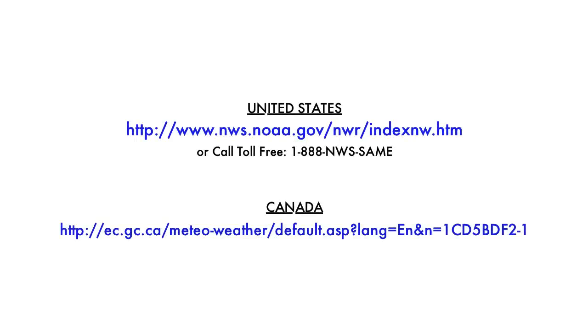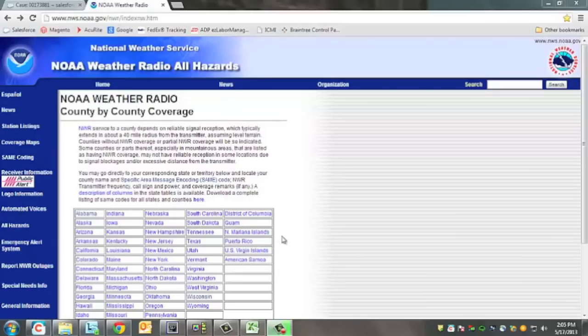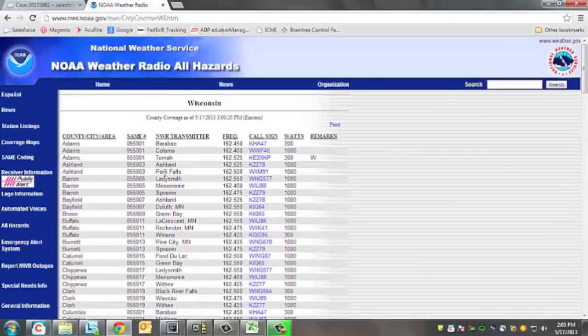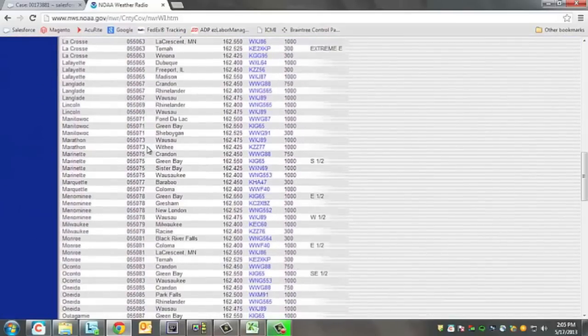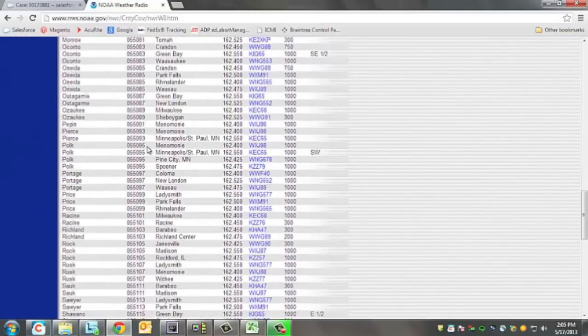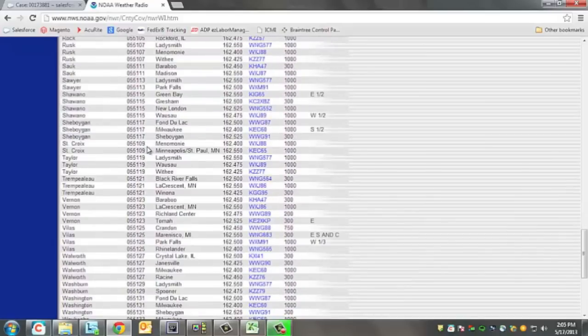Now enter your SAME code. Find your SAME code using the links below or by calling the designated number. Please make sure you enter your SAME FIPS or CLC code and not the channel code. First, start by locating your state in the list, then click its link. As you'll notice, you'll be locating your code in the SAME number column, not the channel frequency. Then locate your county and input this code into your device.